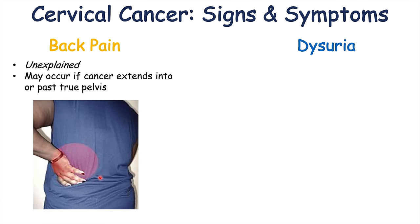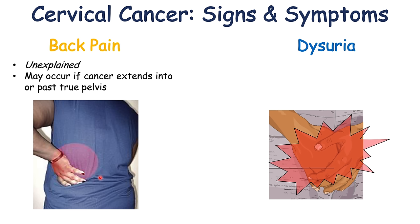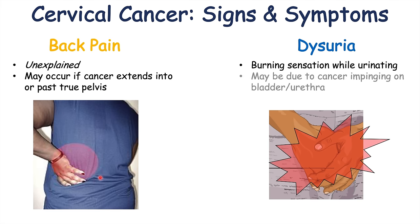Dysuria is another finding in cervical cancer, typically occurring in later stages of the disease when the cancer has spread. Dysuria is a burning sensation while urinating, which can occur because the cancer is impinging on the bladder or urethra. Most commonly, a patient will experience abnormal vaginal bleeding and vaginal discharge before developing later-stage symptoms like back pain and dysuria.